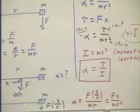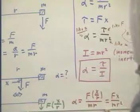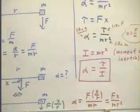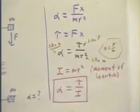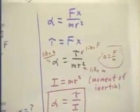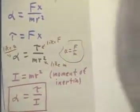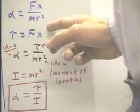Now, if we then want angular acceleration, we have to divide by r again. And what do we get? We get this thing that I've written up here: angular acceleration is fx over mr squared.